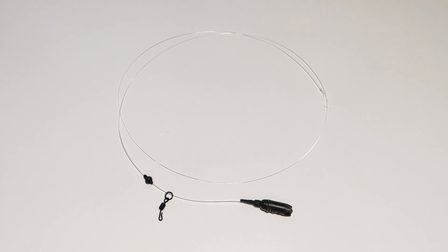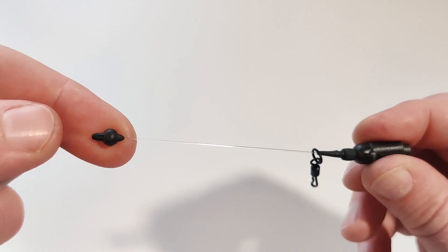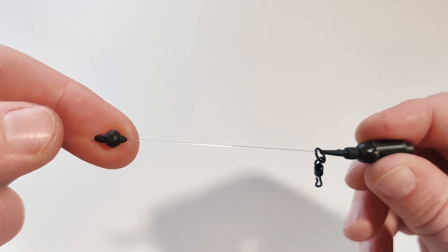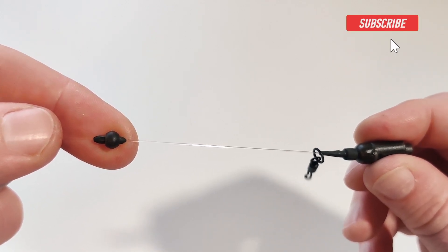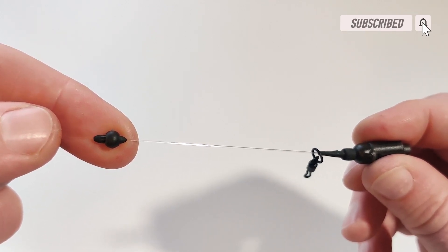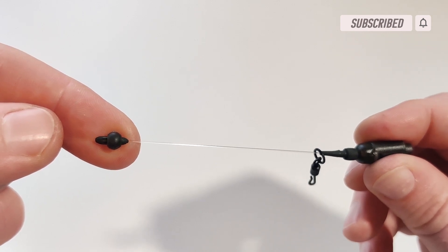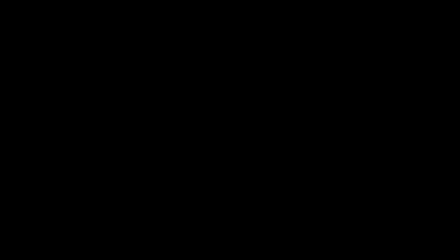And there you go guys that's how you tie your own fluorocarbon leaders. If you've liked this video please hit the like button below and subscribe to the channel for more content. And if you have any suggestions on any more rigs or tips that you'd like me to explain then please add them to the comments section below.